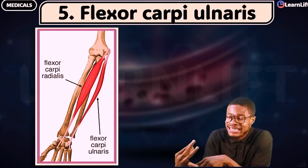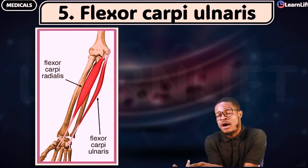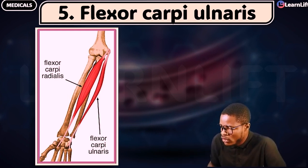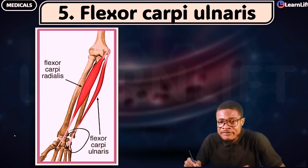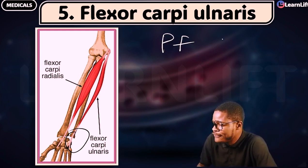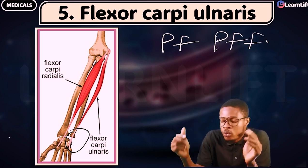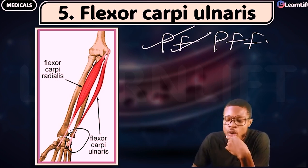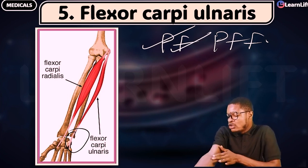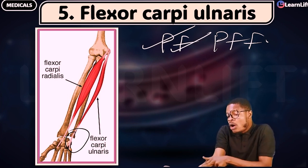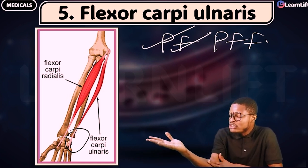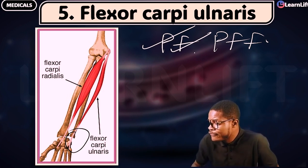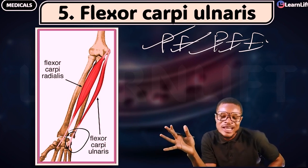The Flexor Carpi Ulnaris will flex the carpals at the ulnar side — that means towards your little finger and ring finger side. So that's why it is called Flexor Carpi Ulnaris. Now give me the five of them: P-F-P-F-F. Number one is the Pronator Teres. Then Flexor Carpi Radialis — towards the radial side. Then the long one: Palmaris Longus. Then Flexor Digitorum Superficialis. And the fifth is Flexor Carpi Ulnaris. That's why we call it PF-PFF.